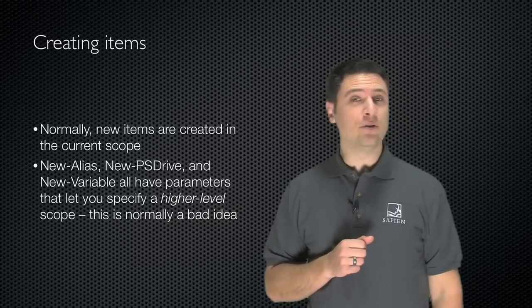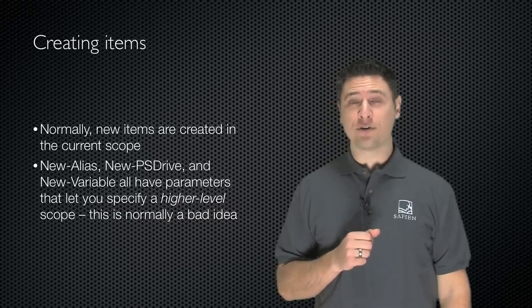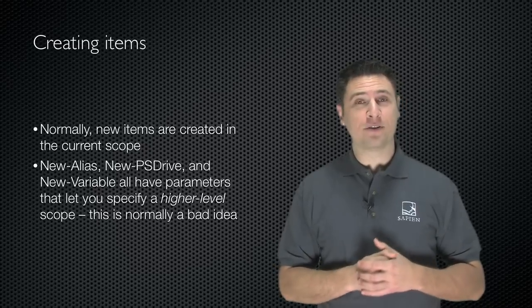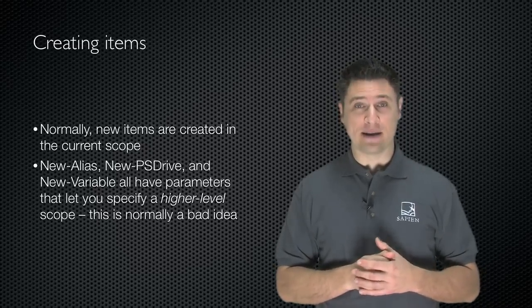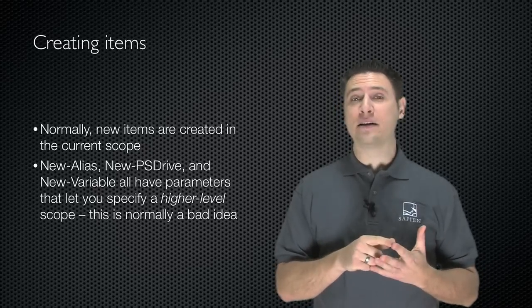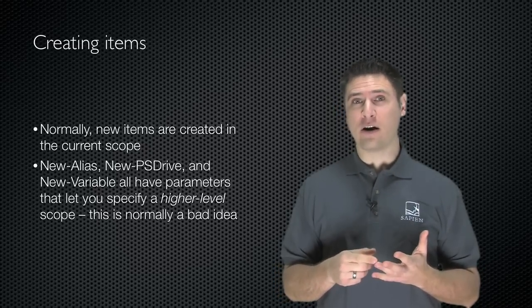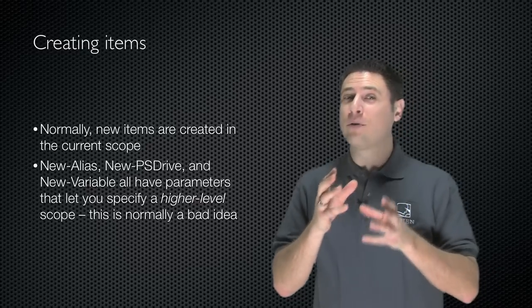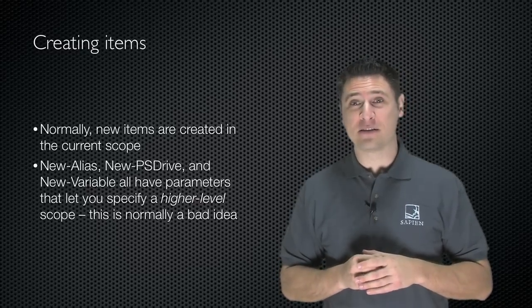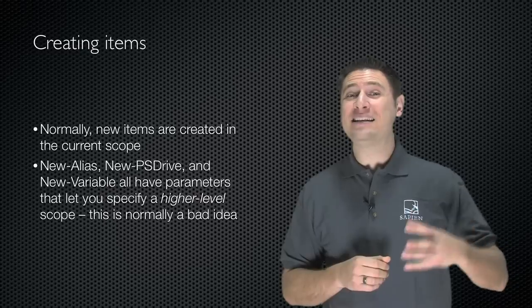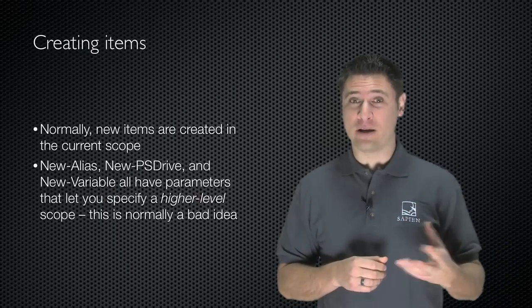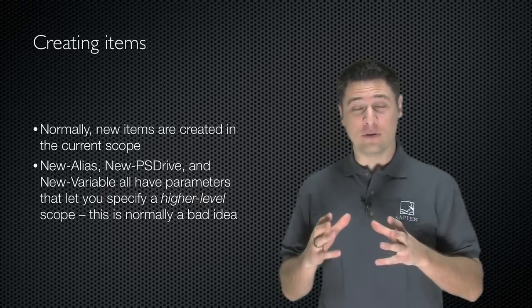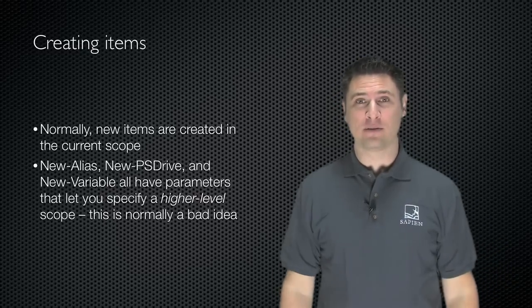Normally, when you create new items, they're created in the current scope. So if you execute a cmdlet like New-Alias, New-PSDrive, or New-Variable, they all have a parameter that will allow you to specify a different scope in which to create the new thing, apart from the default, which is the current scope.